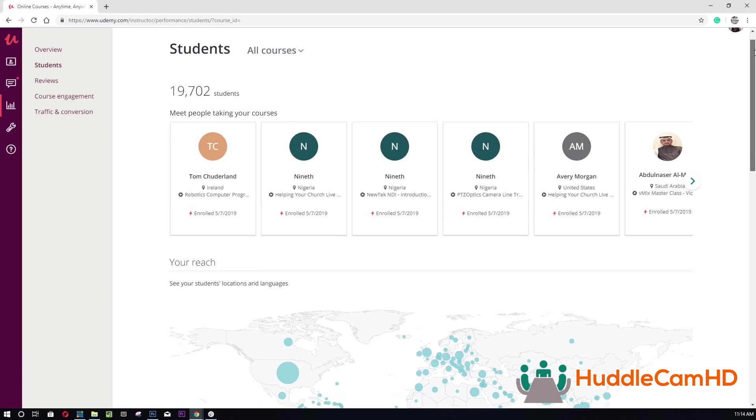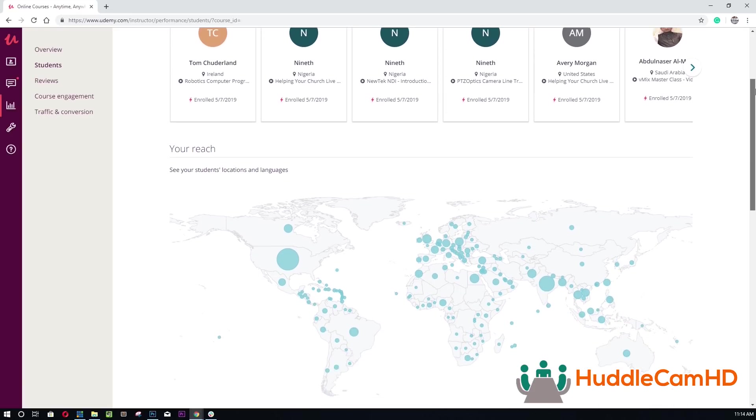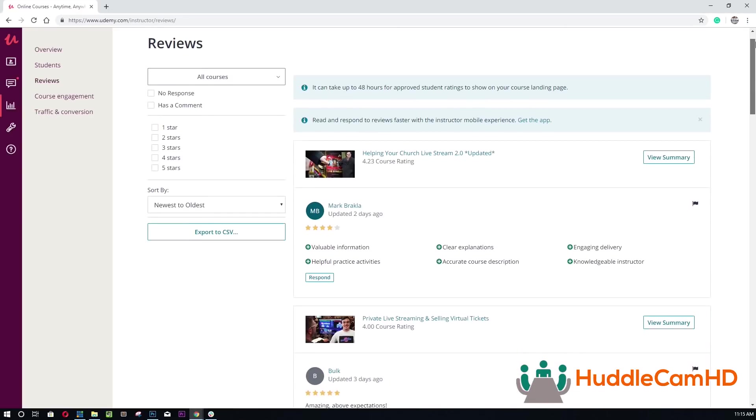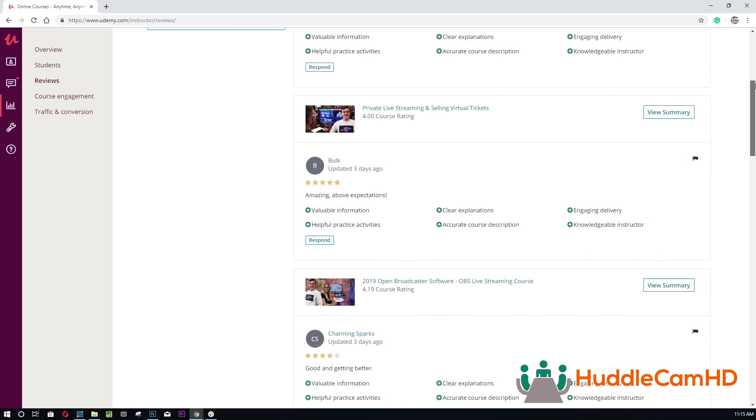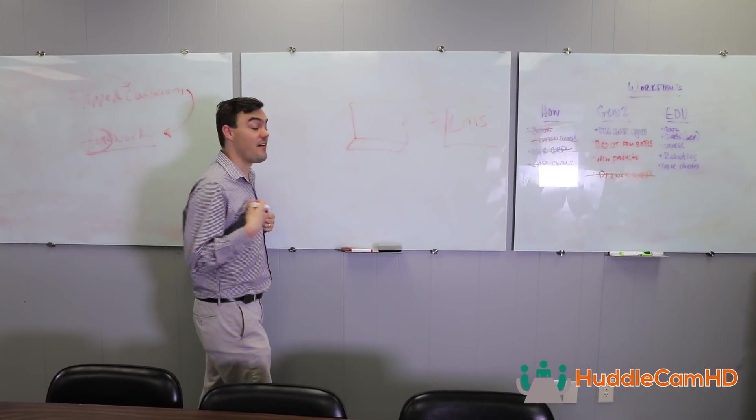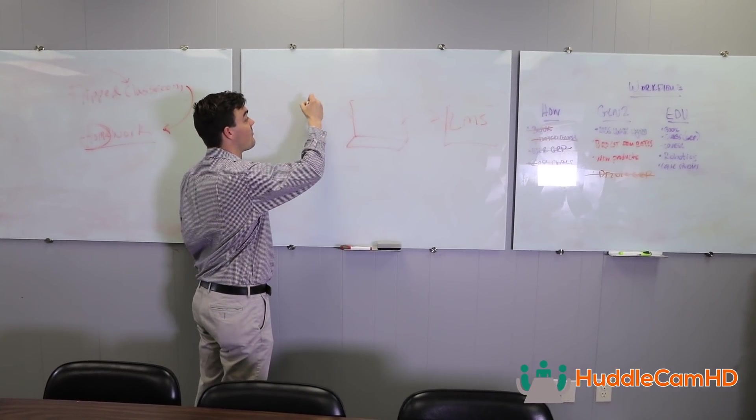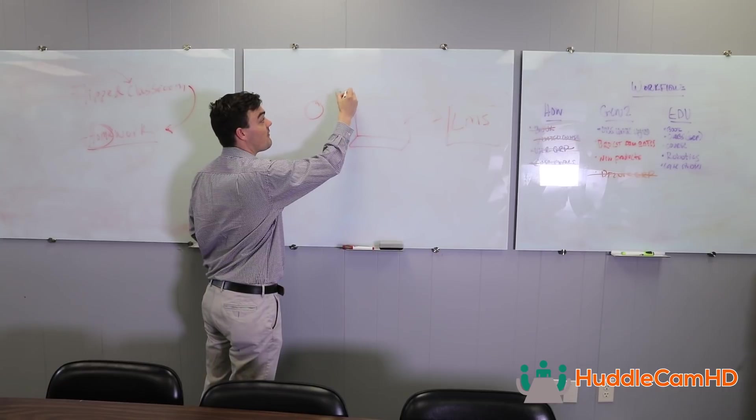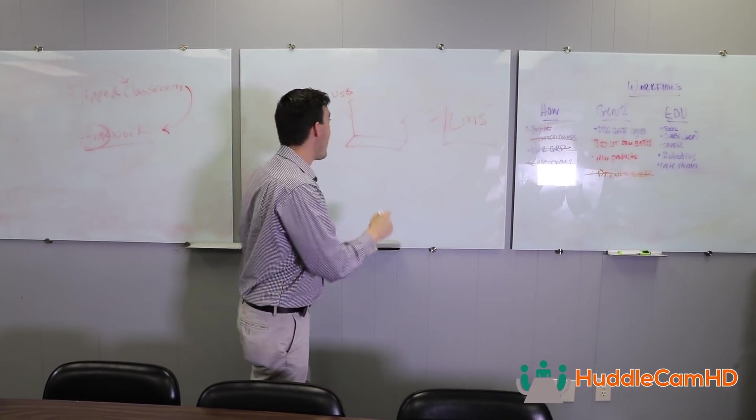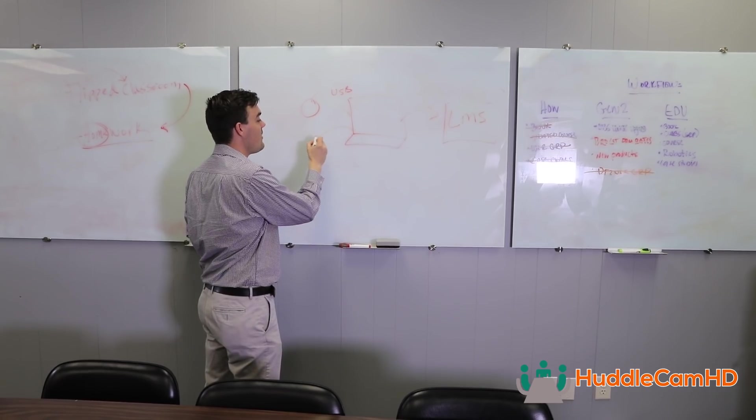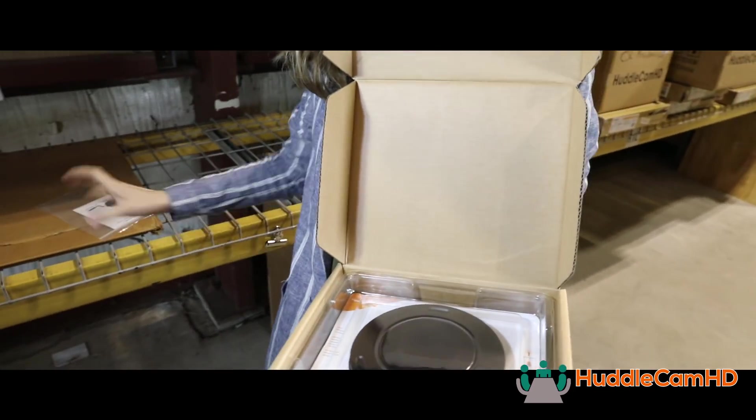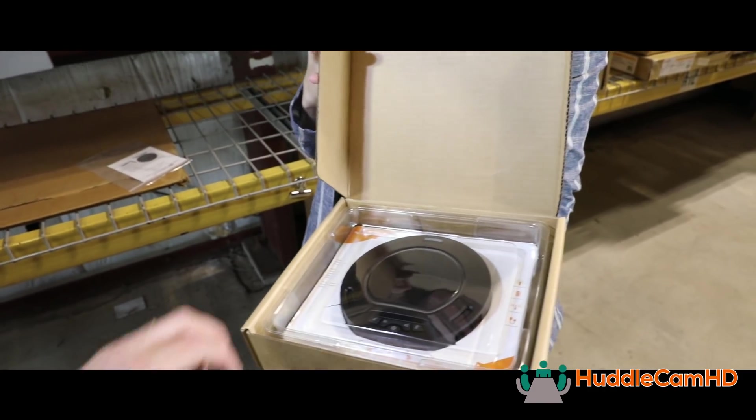You're trying to get video to put on your learning management system, your LMS. I use Udemy, that's more of a public one. All of these great learning management systems, you want to get video to that. Well, the simplest way that I've found is to have a camera. It's USB, right? There's USB ports on your computer. We plug it right in. And then we have a USB microphone. Huddlecam HD has a couple different USB speaker phones. We showed one on our show last week.